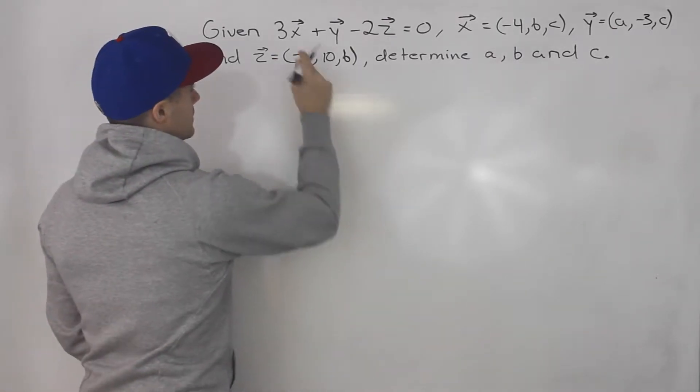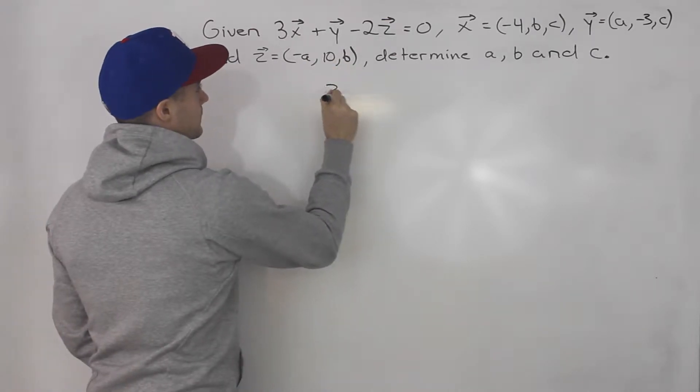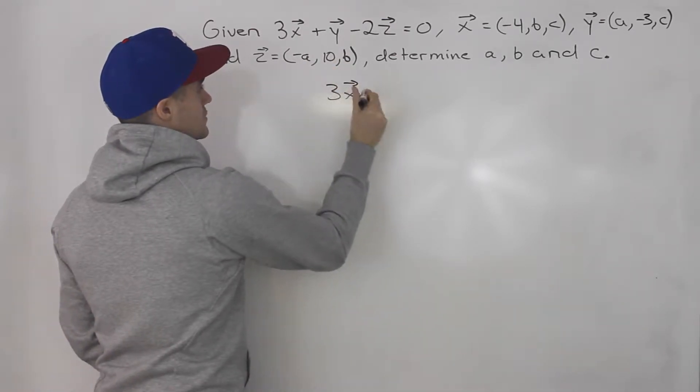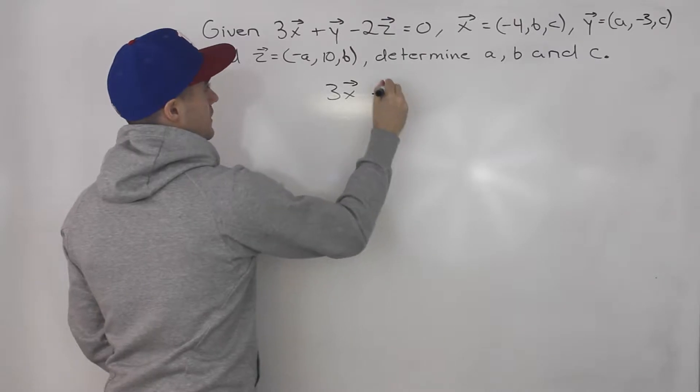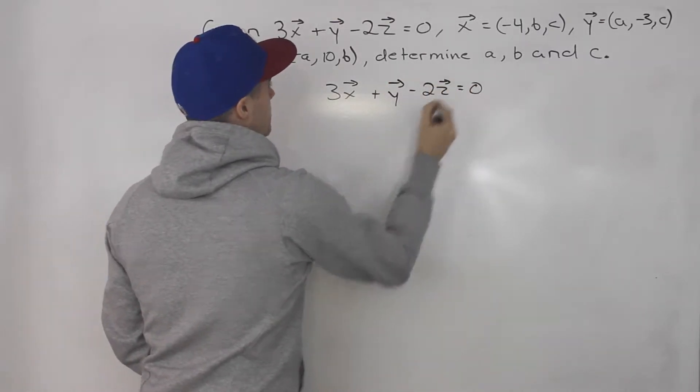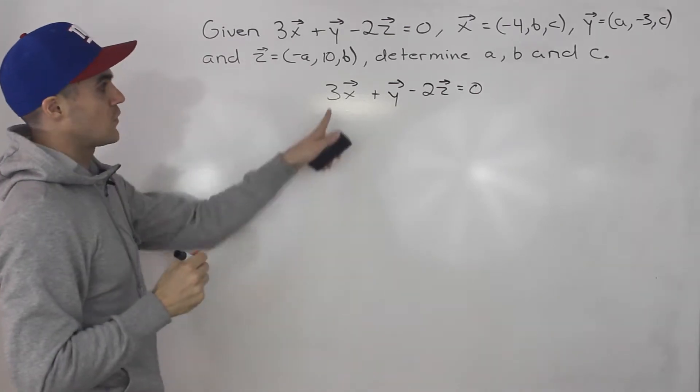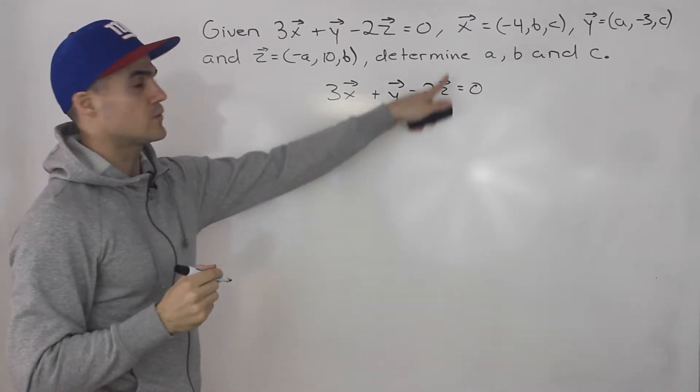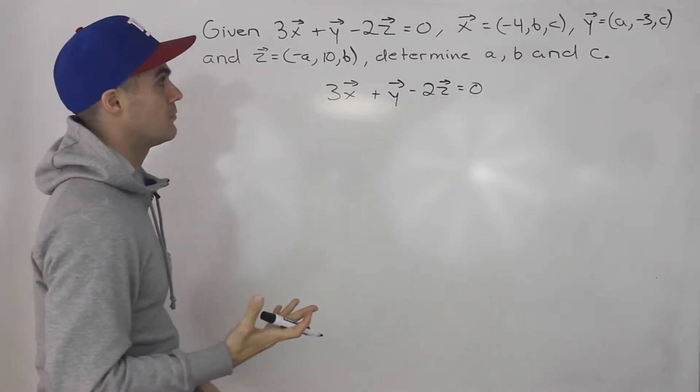So a lot going on here, so let's rewrite this main equation. 3 times vector x plus vector y minus 2 times vector z equals 0, and now notice for vector x, y, and z we could plug in the component form.